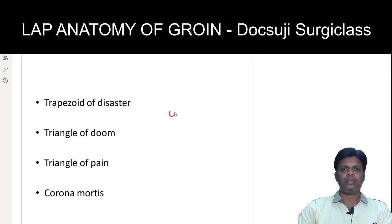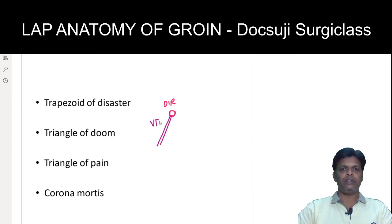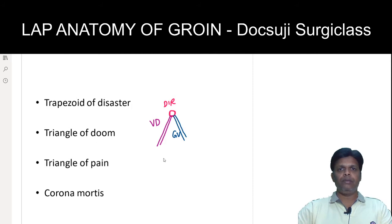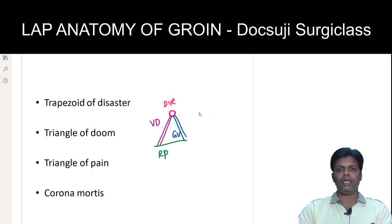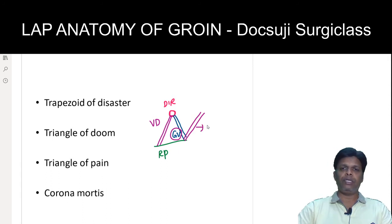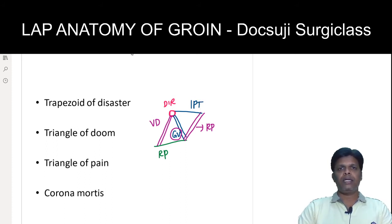In laparoscopic posterior anatomy, there are two important triangles. The first is the triangle of doom: its apex is formed by the deep inguinal ring, the medial boundary is formed by the vas deferens, the lateral boundary is formed by the gonadal vessels, and the lower boundary is formed by the reflected part of the peritoneum. Just lateral to that is the triangle of pain: medially it is bounded by the gonadal vessels, laterally by the reflected part of the peritoneum, and above by the iliopubic tract.